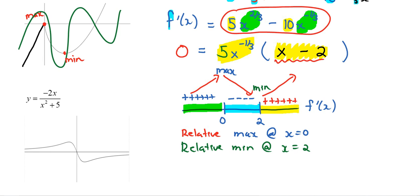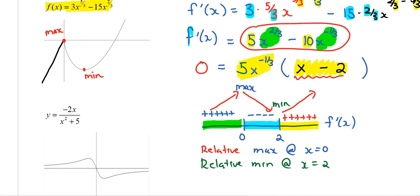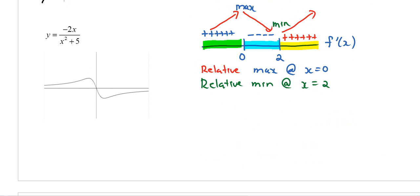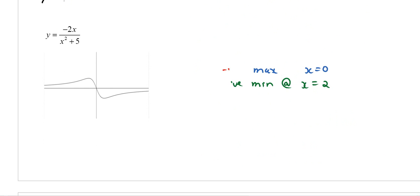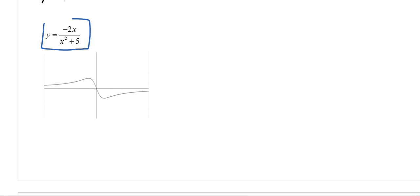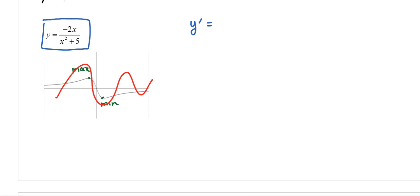We can verify this with the graph: the point at x = 2 is the minimum and the point at x = 0 is the maximum. That's the first derivative test applied to the first example. For the second example, I have a rational expression. Looking at the graph, there appears to be a maximum and a minimum. But let's pretend we don't have the picture and verify using the first derivative test.